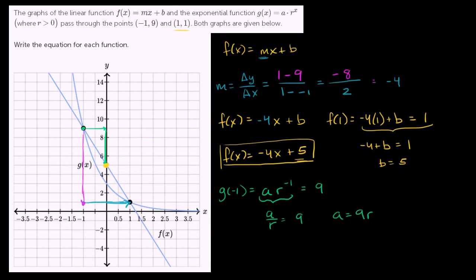Now let's use this other point. They tell us that g(1), which would be the same thing as a·r^1, or just a·r, equals 1. So a·r = 1. How can we use this information? a = 9r, and a·r = 1 to solve for a and r.